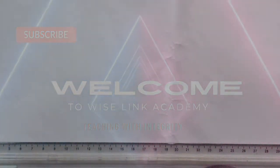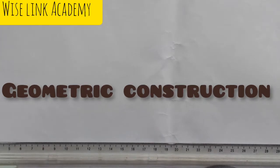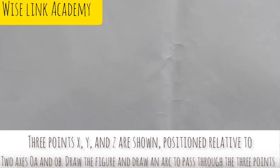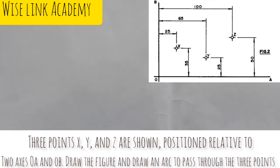Welcome to Wiselink Academy. Today I'm going to be looking into geometric construction. The question goes: three points X, Y, and Z are shown in the figure below, as you can see at the right corner of the screen, positioned relative to two axes OA and OB. Draw the figure and draw an arc to pass through the three points.